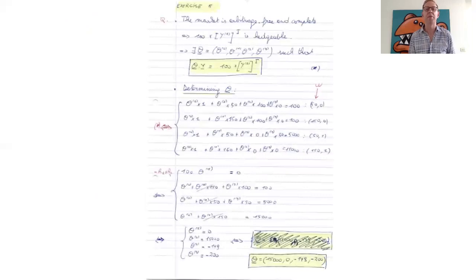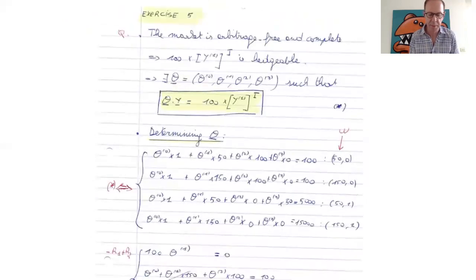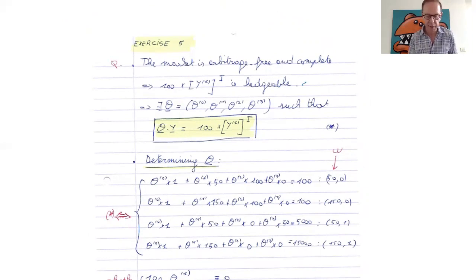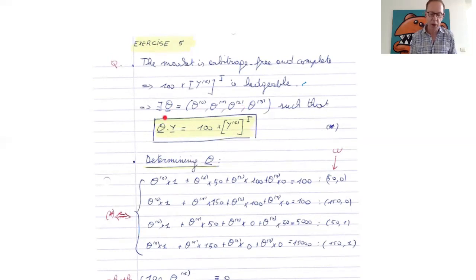Here is the solution to that problem. The market is arbitrage free and complete, so this claim must be hedgeable. That means there exists a trading strategy (θ₀, θ₁, θ₂, θ₃) such that the time one value of this trading strategy is identical with probability one to the exotic payoff. We will work out this equality for all possible values of the state of the world at the end of the period.